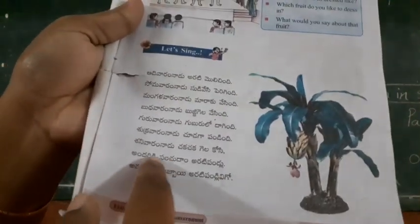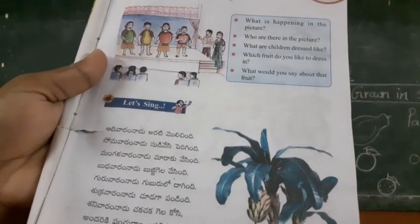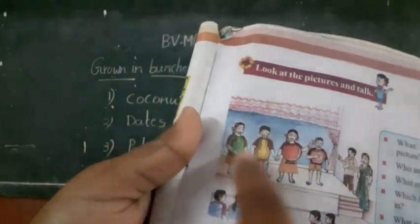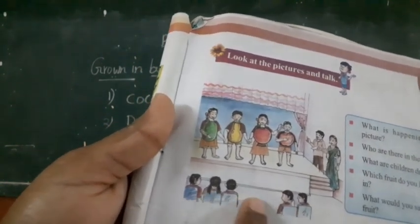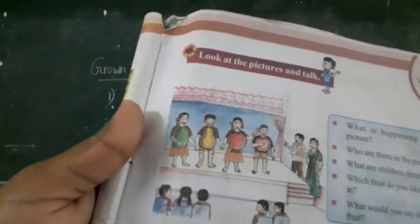Next, here is one drama. What is it children? Who are they in this picture? Here are some children. These are teachers. These are also children. On this stage they play a drama. Which topic do they play the drama on? They play a drama about fruits. Which fruits are they, children?